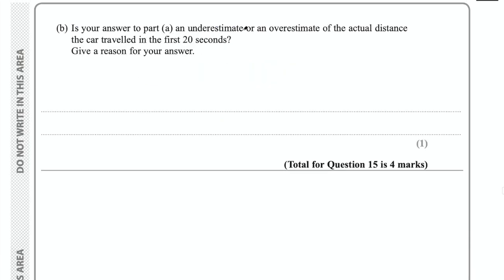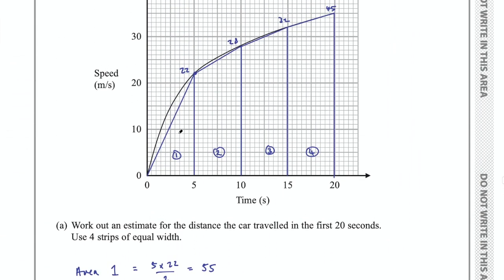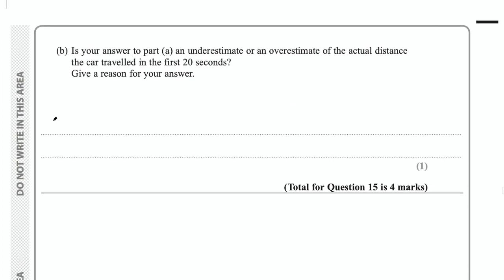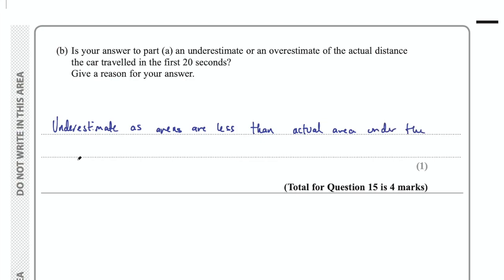Part B: is your answer an underestimate or overestimate? Looking at the graph, each of the shapes is below the curve — each trapezium leaves a small gap between the straight-line top and the actual curve. So this is an underestimate, as the areas used are less than the actual area under the curve. That was 1 mark for part B and question 15 for 4 marks.